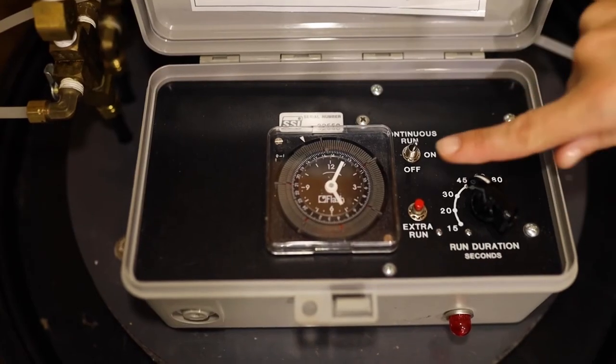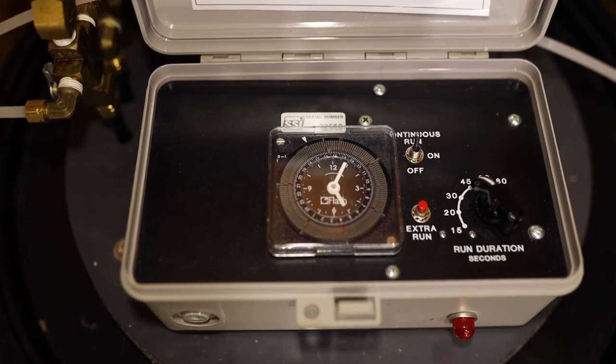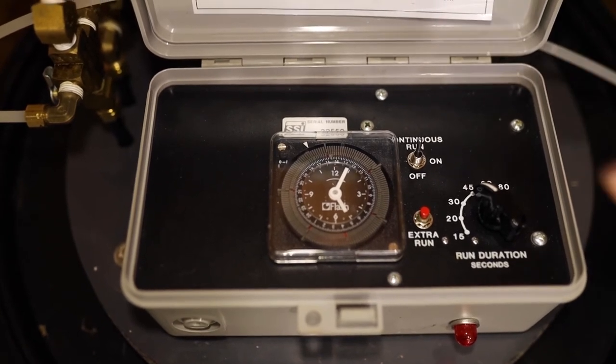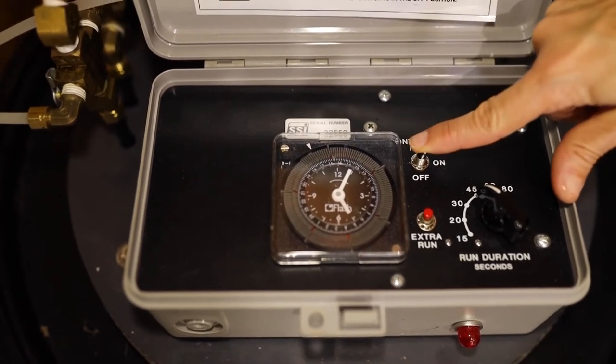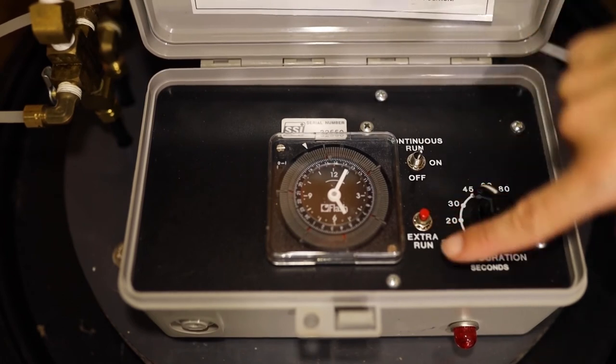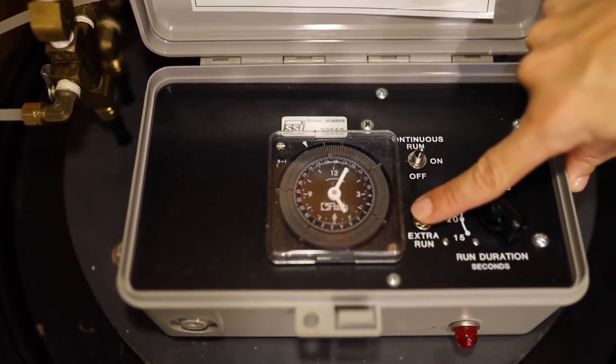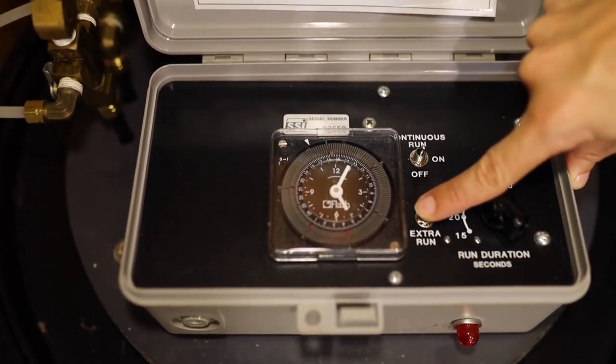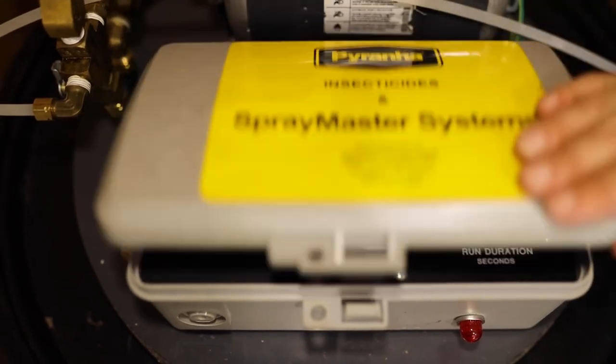The system will run continuously when the toggle switch is in the continuous position. The system will not operate when the switch is in the off position. The red extra run button can be used at any time to test the system for extra spraying. Close the timer lid when you're finished.